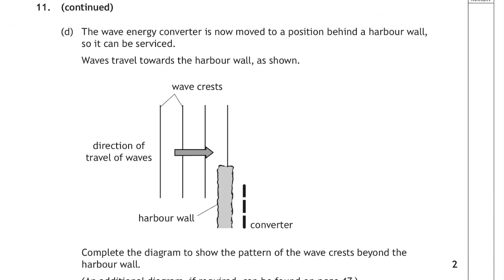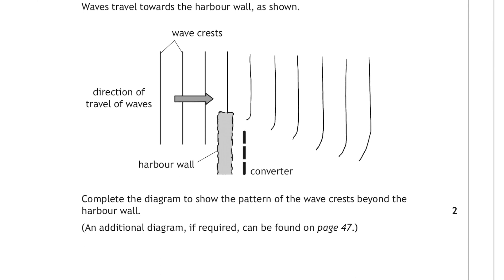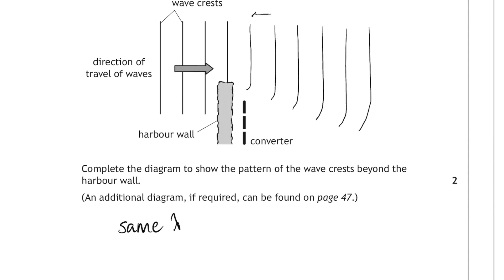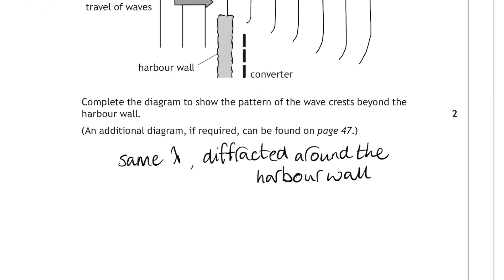11 part D. The wave energy converter is now moved to a position behind the harbour wall so it can be serviced. Waves travel towards the harbour wall as shown. We have to complete the diagram to show the pattern of wave crests beyond the harbour wall. This is a diffraction diagram here. So we want to show the waves still having the same wavelength, the same distance between them, but they are curving around that obstacle, curving around the harbour wall there. So make sure you've got the same wavelength, but they bend, they diffract around the harbour wall. Two marks there. One for showing that it's a constant wavelength, and one for showing the bending of the waves.